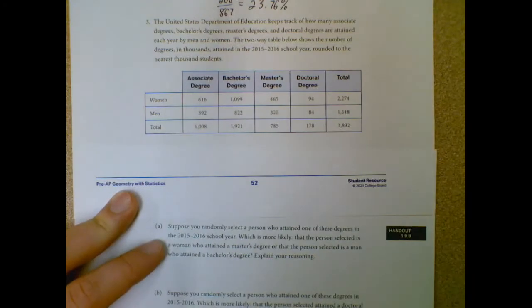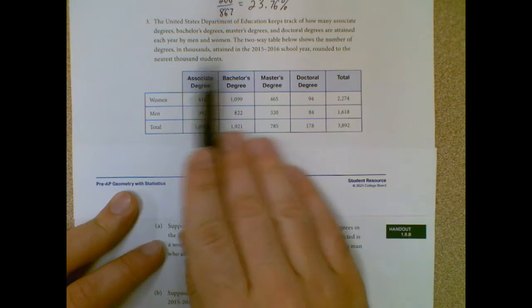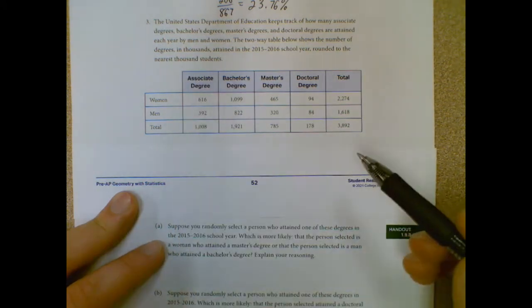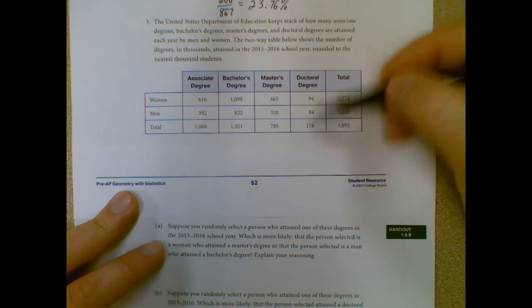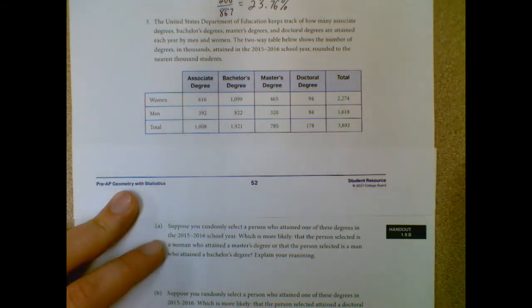We have the United States Department of Education keeps track of how many associate degrees, bachelor's degrees, master's degrees, and doctoral degrees are attained each year by men and women. The two-way table below, or contingency table, shows the number of degrees in thousands attained in the 2015-2016 school year, rounded to the nearest thousand students. So that's important to know here - it's rounded to the nearest thousand. So when we're looking at these, these are in thousands. So doctoral degrees for women would be 94,000. Just keep that in mind.